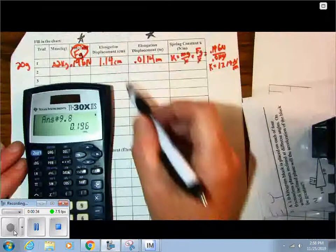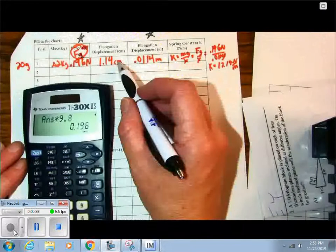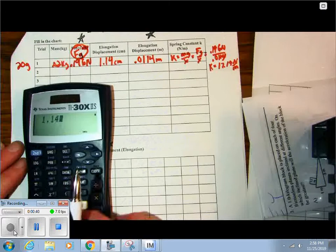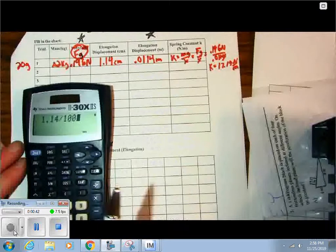Now I took my measurement of about 1 centimeter and I divided it by 100. So I took 1.14 centimeters and I divided it by 100. It got me that number.